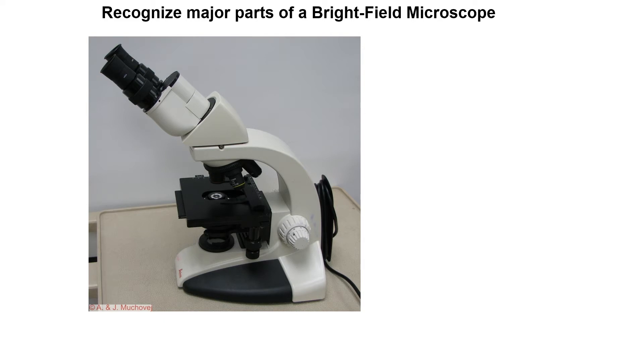When we look at the major parts of a brightfield microscope they will include the ocular lens, and the ocular lens is the one that's closest to your eye and it re-magnifies the image formed by the objective lens.